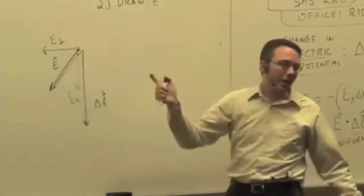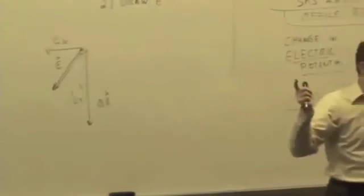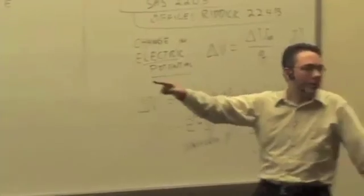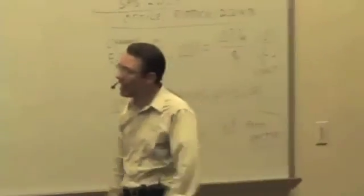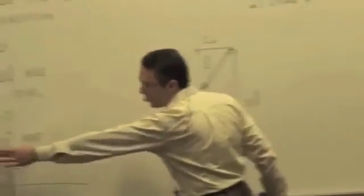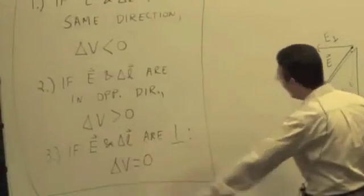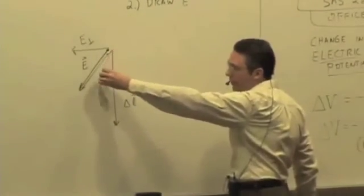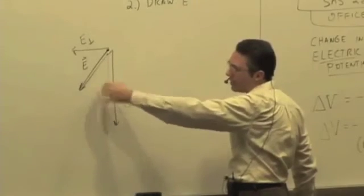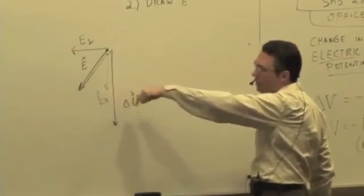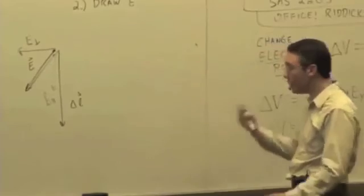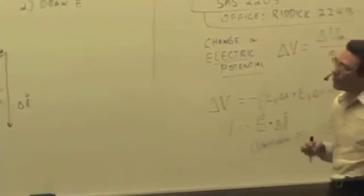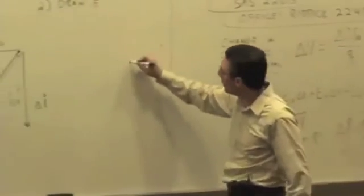The perpendicular component isn't going to contribute to the delta V, because we know that any field direction that's perpendicular to the path gives you a delta V of zero. So the only thing that matters here is what component of the field lies along that path vector. If it's in the same direction as that path vector, you get a negative. If it's in the opposite direction, if you had a field like so,